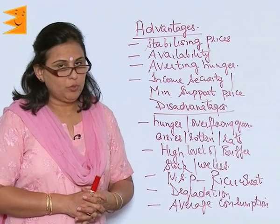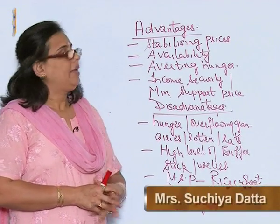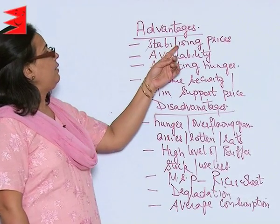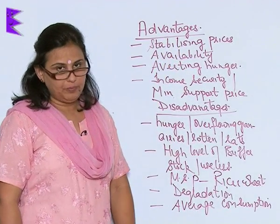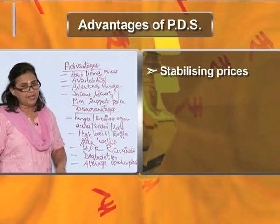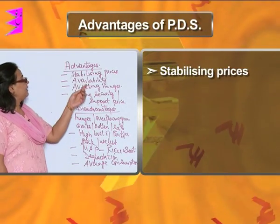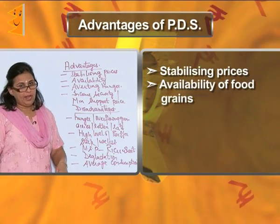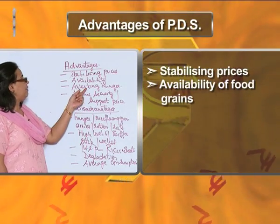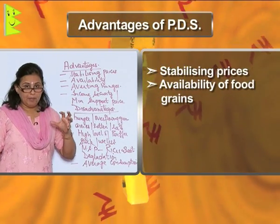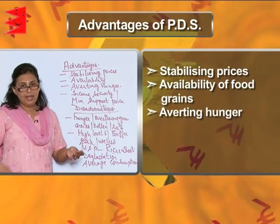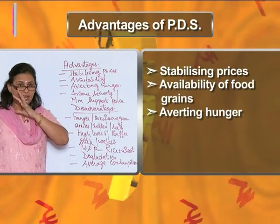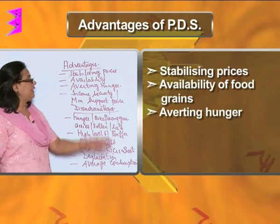The public distribution system in India has various advantages and disadvantages. The first advantage is that due to this system, prices have been stabilized in the market. The second is that food grains are available to the people at all times. The third advantage is that it has been able to avert hunger by transporting food grains from areas of surplus into areas where there is deficiency.